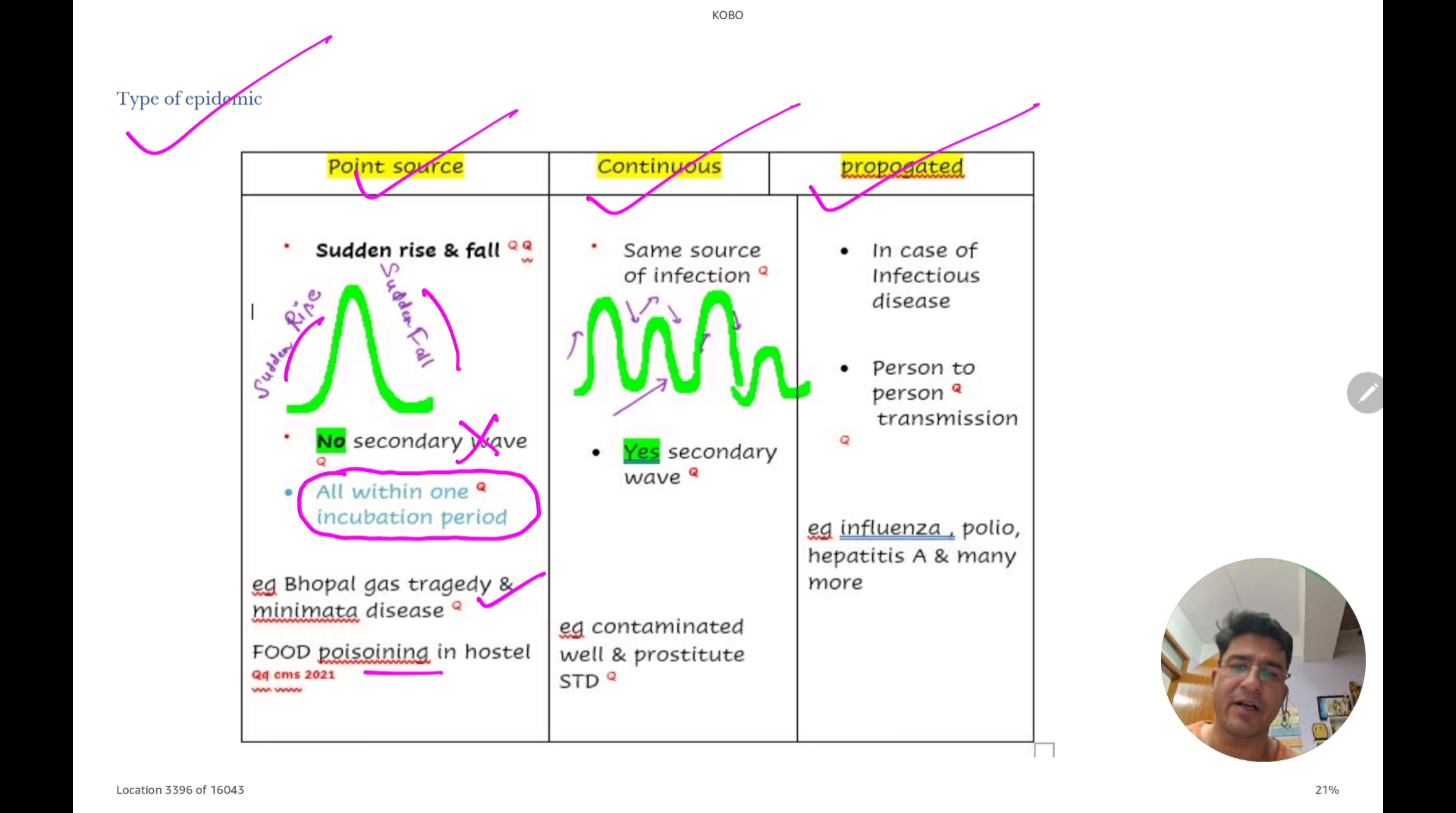Aapne dekha hoga hostels mein kya hota? MBBS mein. Kisi ek mess wale ko typhoid hua. To sab ko typhoid ho gaya. Kuch particular time mein. So this is point source. Kisi ek insaan se ya kisi ek problem se achanak se chije fail jana. Point source.